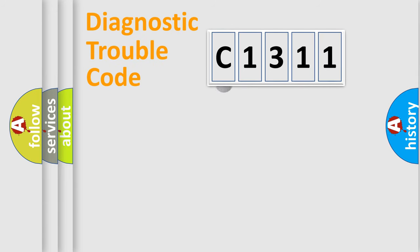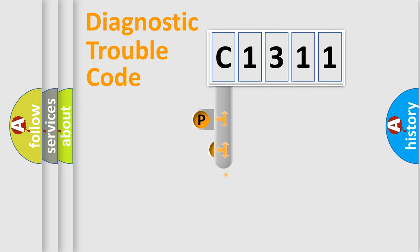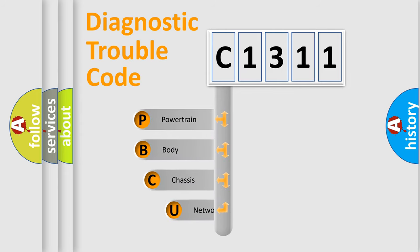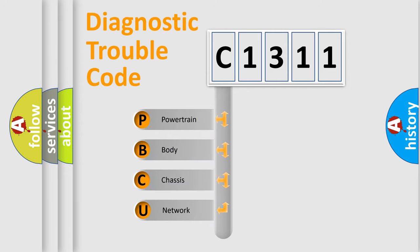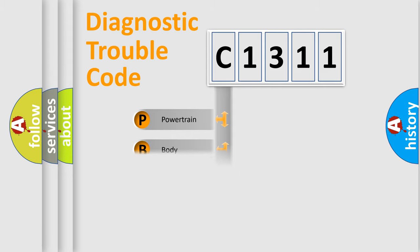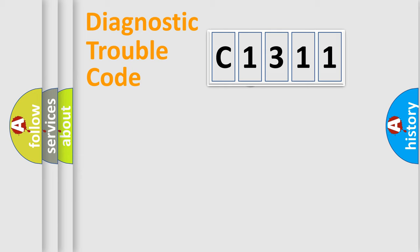Let's do this. First, let's look at the history of diagnostic fault code composition according to the OBD2 protocol, which is unified for all automakers since 2000. We divide the electric system of the automobile into four basic units: Powertrain, Body, Chassis, and Network.